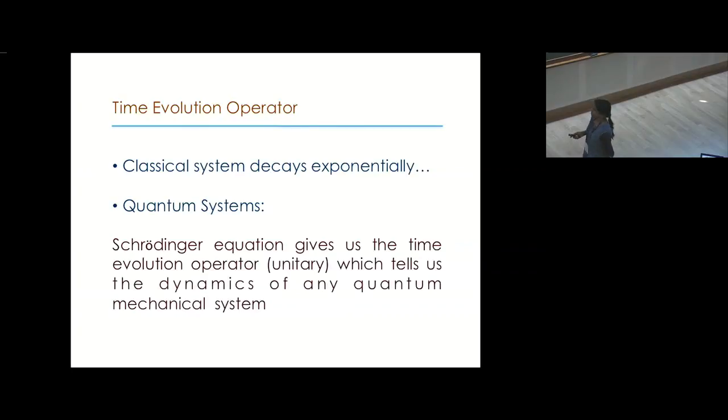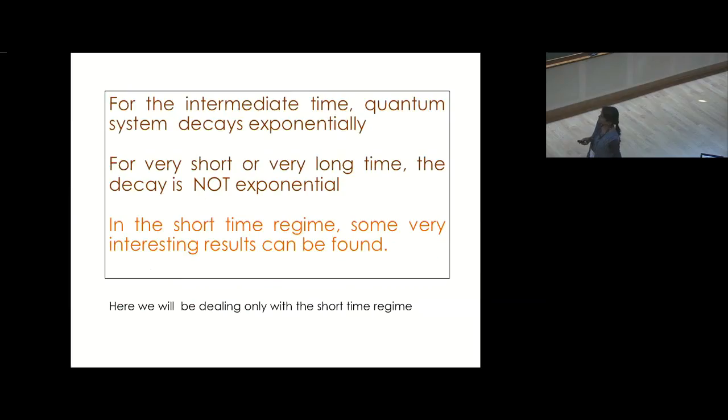In quantum mechanics, we have a time evolution operator. Generally, classically, the system decays exponentially, but in quantum mechanics we have a Schrodinger equation which gives us the time evolution operator, which is unitary and which tells us about the dynamics of any quantum mechanical system. For intermediate time, quantum systems decay exponentially. For very short or very long time, the decay is not exponential. In the short time regime, some very interesting results can be found. So here we are dealing only with the short time regime.